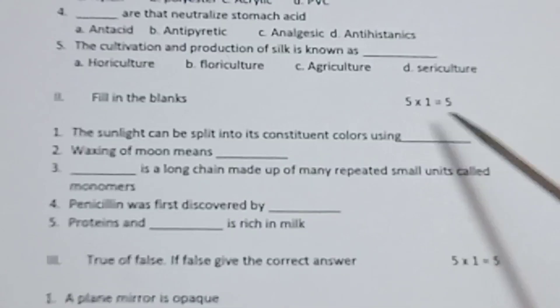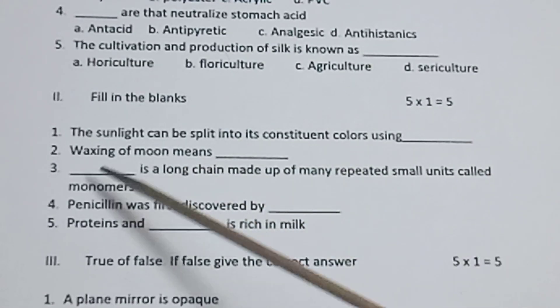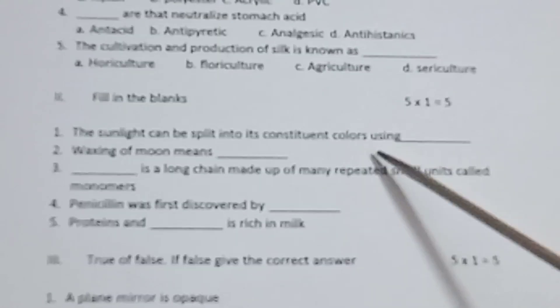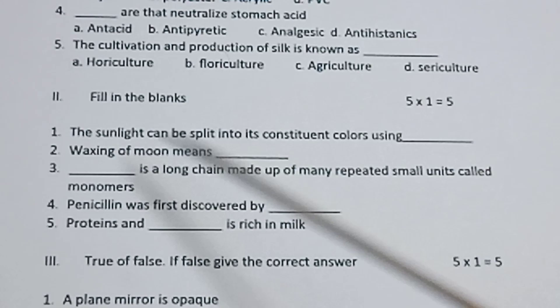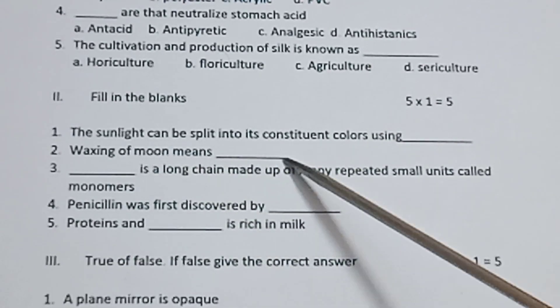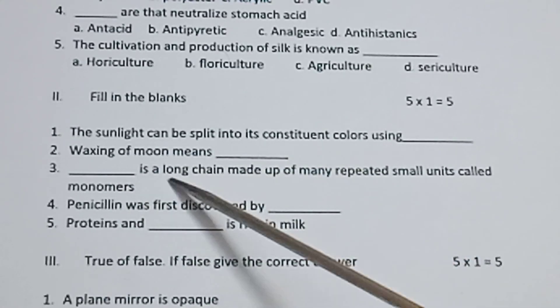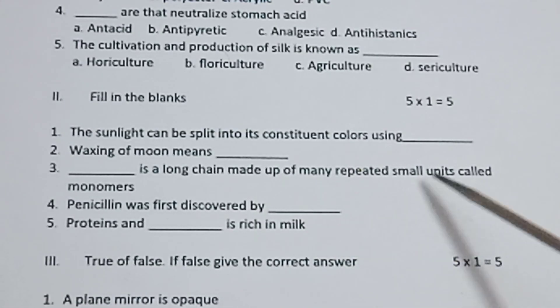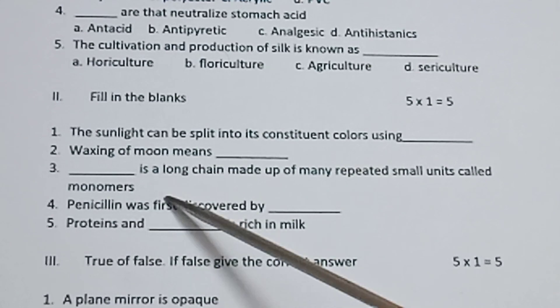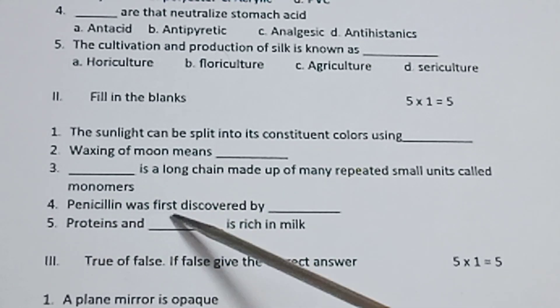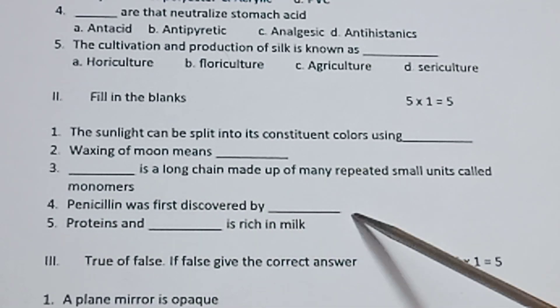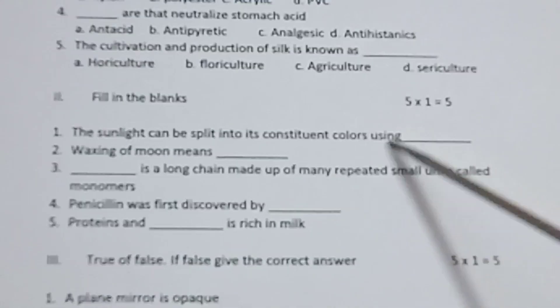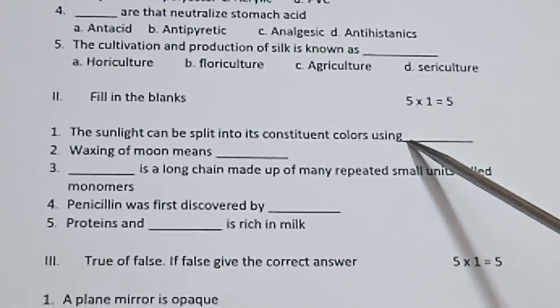Roman numeral 2, fill in the blanks. 5 into 1 is equal to 5. First one, the sunlight can be split into its constituent colors using dash. Waxing of moon means dash. Third one, dash is a long chain made up of many repeated small units called monomers. Fourth one, penicillin was first discovered by dash. Fifth one, proteins and dash is rich in milk. Each dash carries one mark.